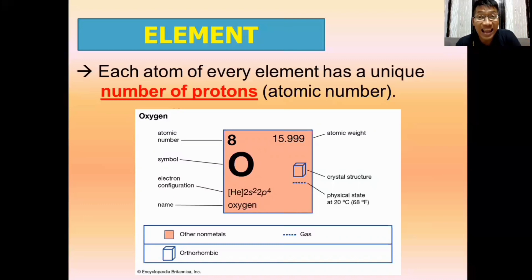And the elements in the periodic table are arranged according to increasing atomic number. This means the first element in the periodic table, which is hydrogen, has an atomic number of one. Therefore, the number of protons present in hydrogen is just one.